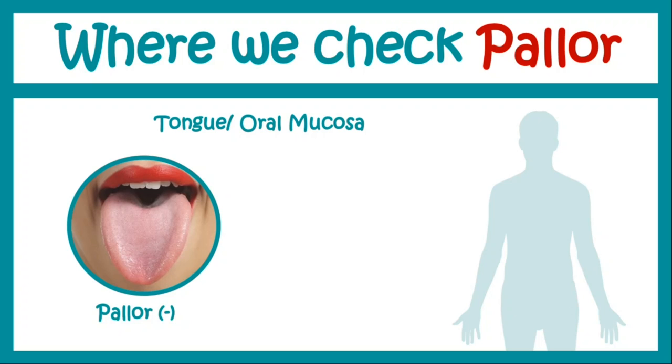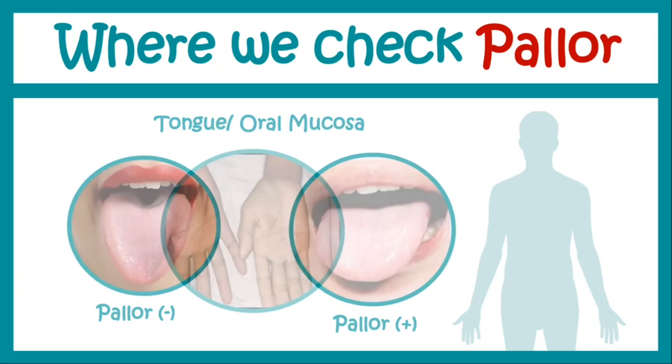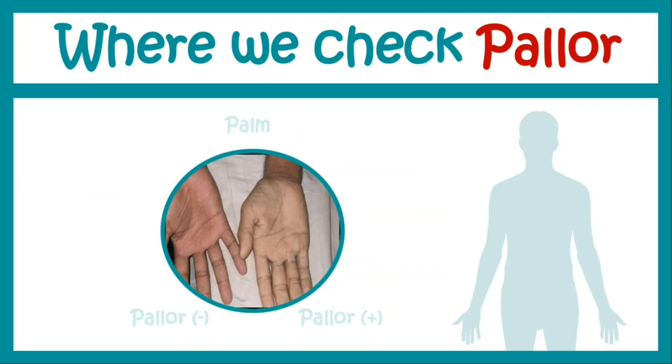We also check pallor in the tongue or oral mucosa. This tongue shows a normal color with no paleness — pallor is absent. This other tongue shows a positive pallor, meaning paleness is present.